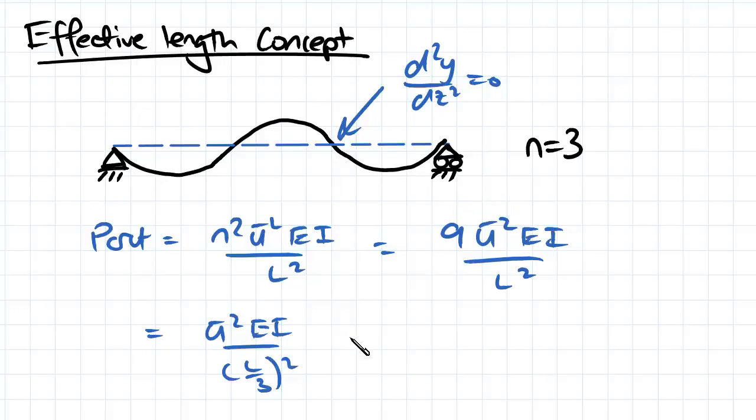So what we can actually do is we can replace this L over 3 and replace the L and the n with what's called the effective length. So if we know the effective length.